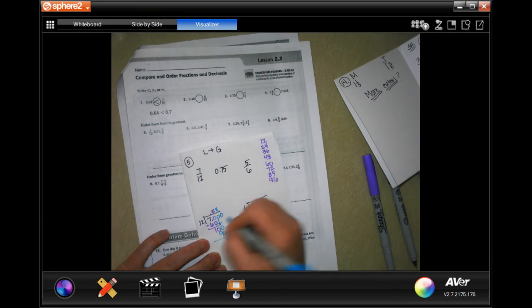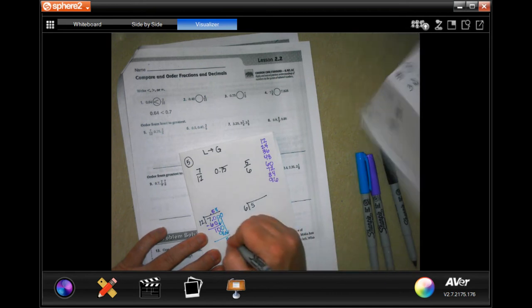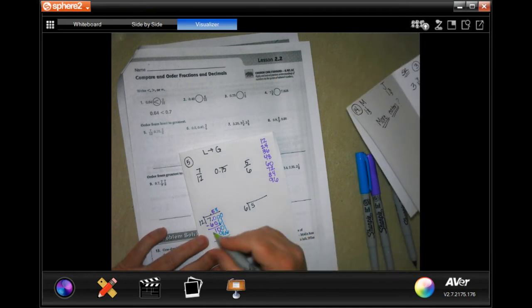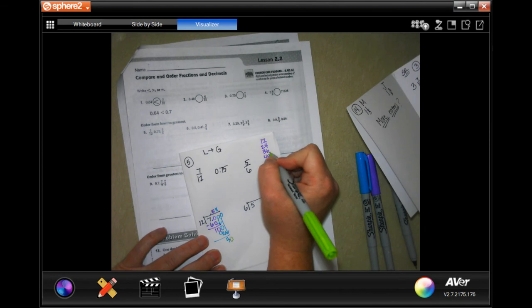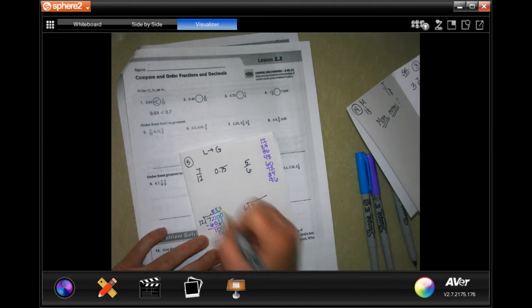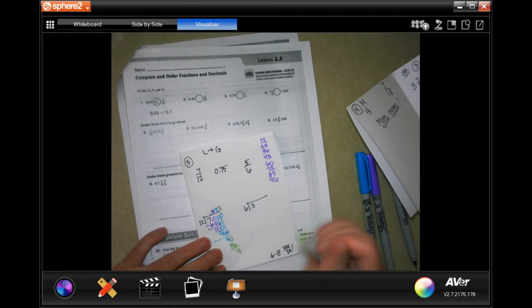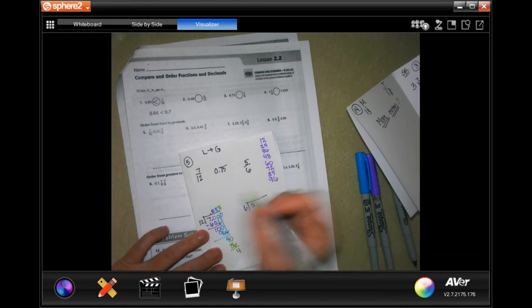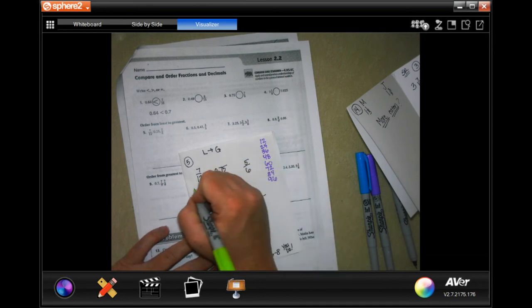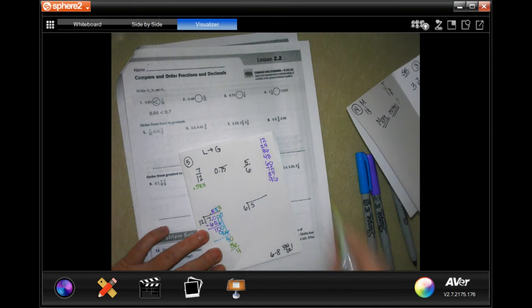Add another 0. And then bring that down with another color. 12 into 40, well, 48 is too big, so 36 is 3. That's 36. We'll have 4 left over, and that's going to repeat them. So, but that makes this one 0.583.